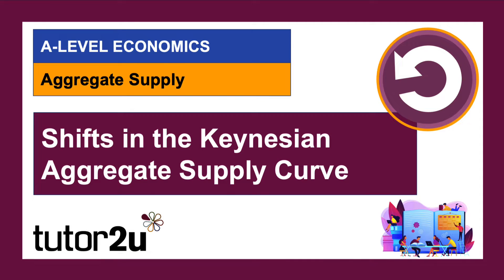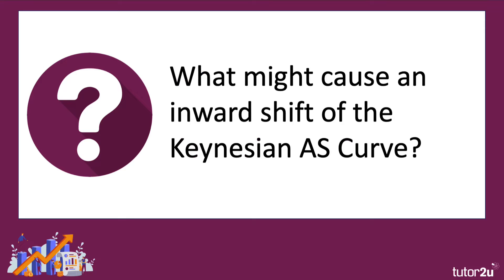Hi there. Let's spend a few minutes working through the causes and the effects of shifts in the Keynesian aggregate supply curve. First of all, what might cause an inward shift of Keynesian aggregate supply?